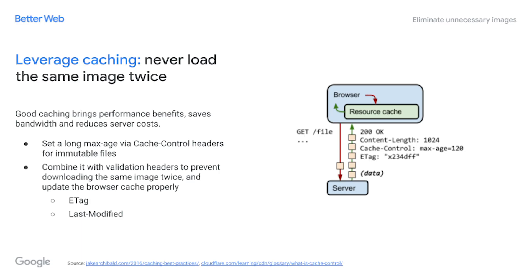As a next step, you should check the cache expiry time for your resources. A lot of images are not cached for a long time, so they are not available on repeat views when users are coming back to your page. You want to make sure that cache expiry times are as high as possible — like a few months or even a year. This also takes load from your servers and reduces the overall traffic on your page, which is a win-win situation for both you and your users.